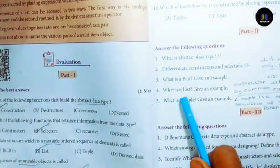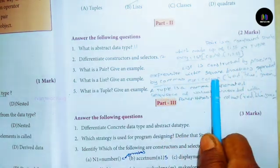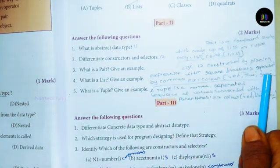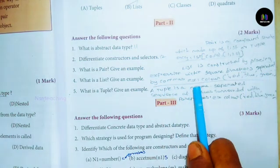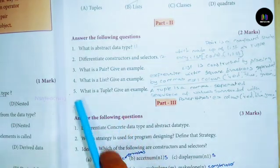What is a list? Give an example. Answer: List is constructed by placing expressions within square brackets, separated by commas. Example: color equals [red, blue, green].